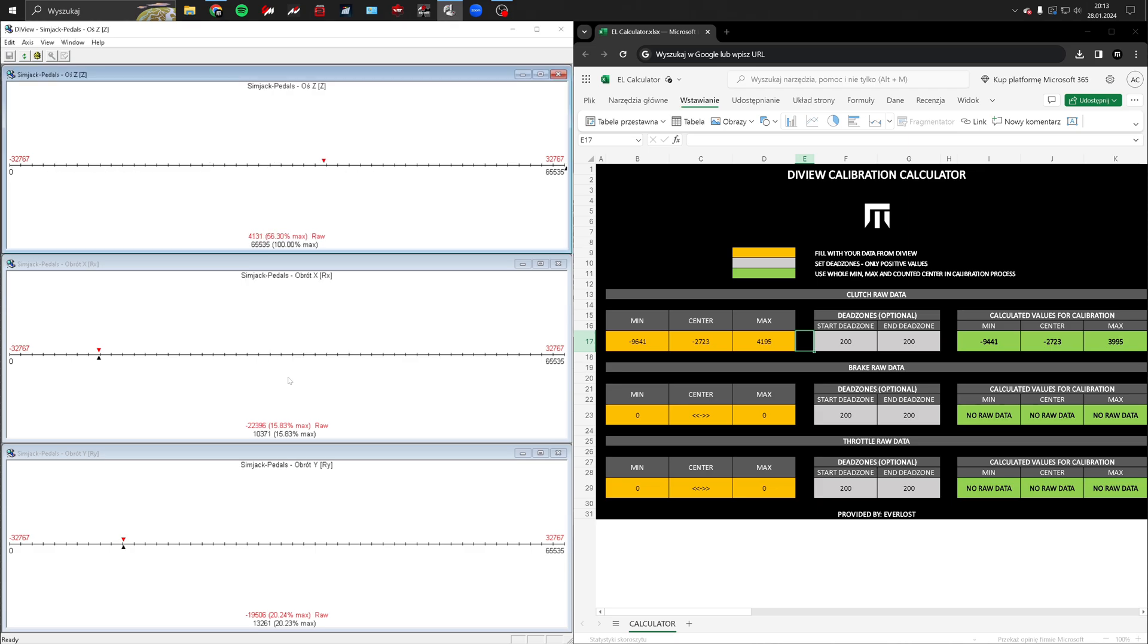After pressing OK, you can see that the pedal uses full scale of the axis. Repeat this process for the throttle and brake.